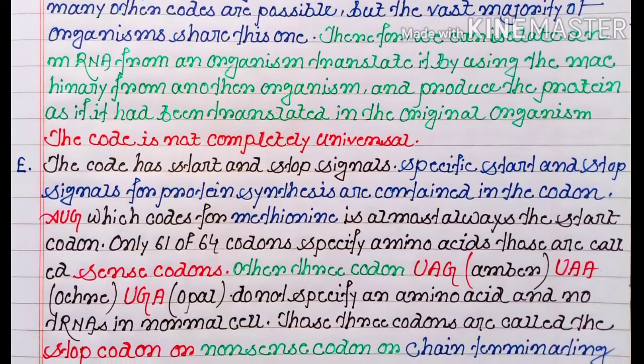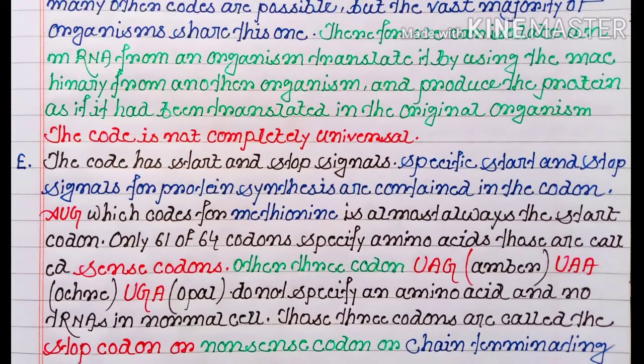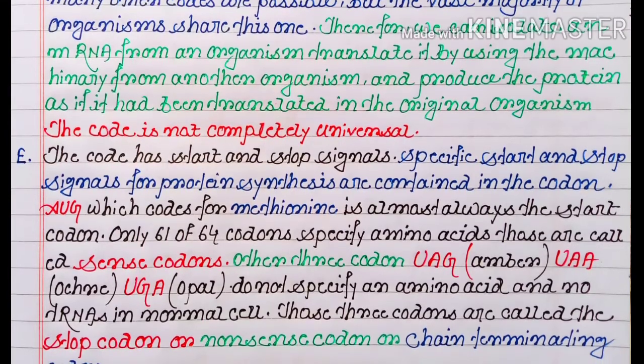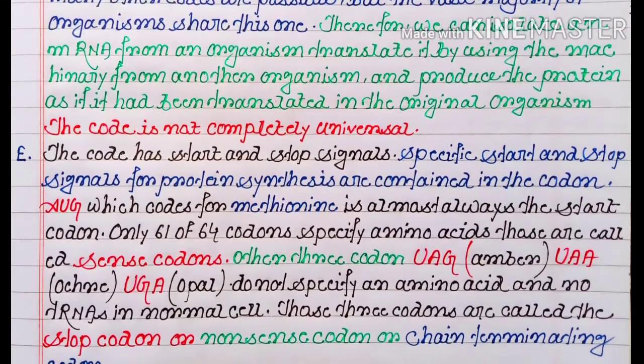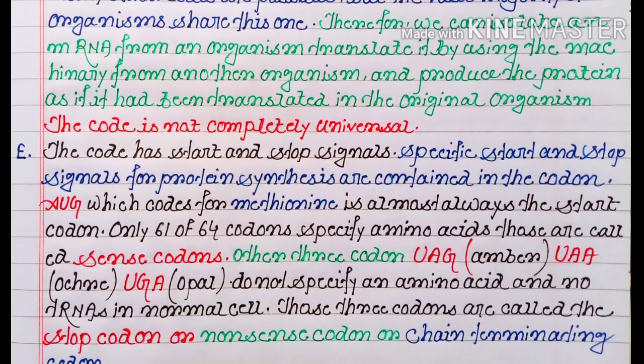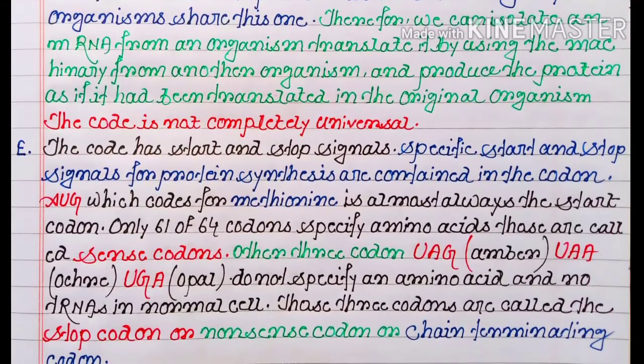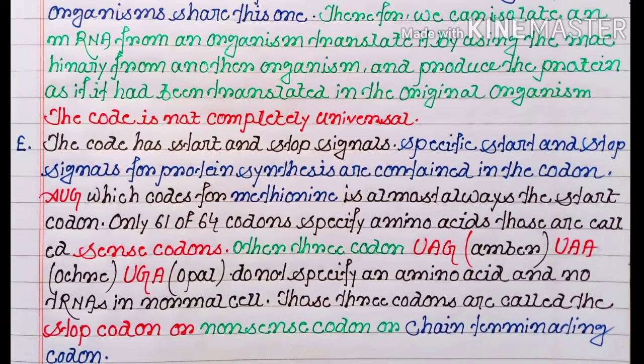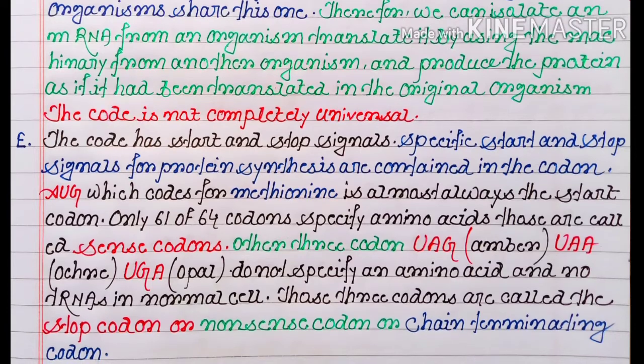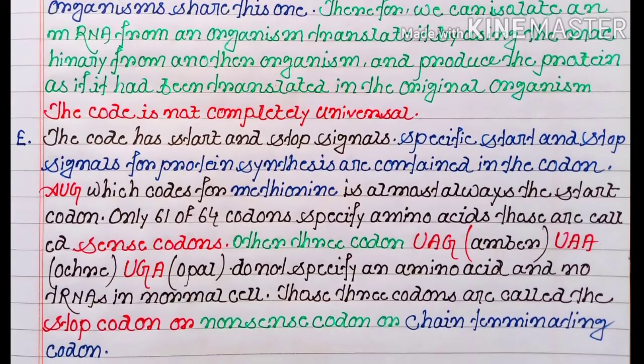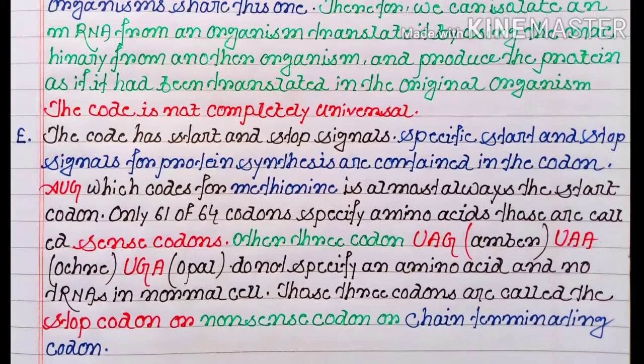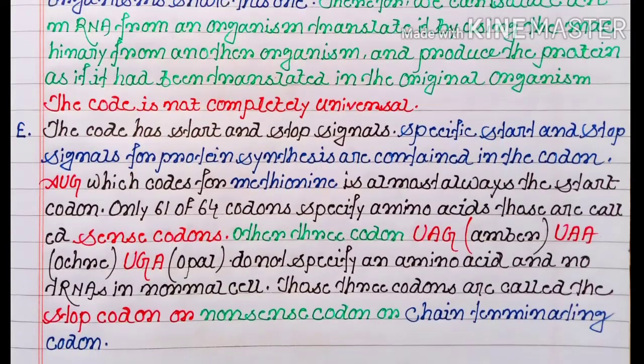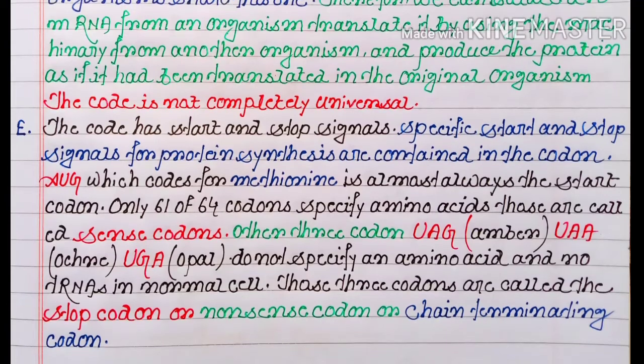Only 61 of 64 codons specify amino acids; those are called sense codons. Other three codons—that is UAG or amber, and UAA or ochre, and UGA or opal—do not specify an amino acid and no tRNAs in normal cells. Those three codons are called the stop codon or nonsense codon or chain terminating codon.